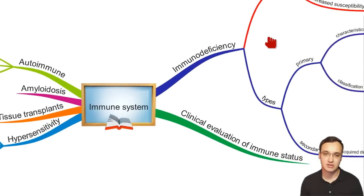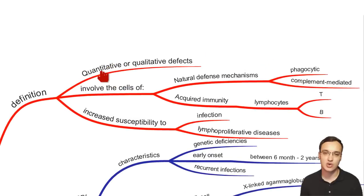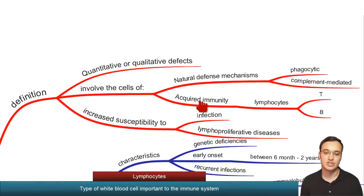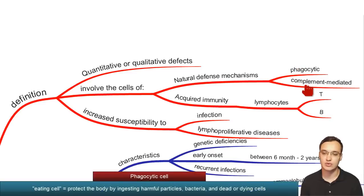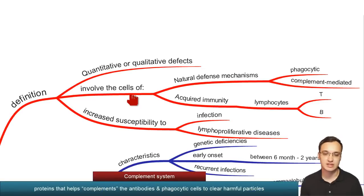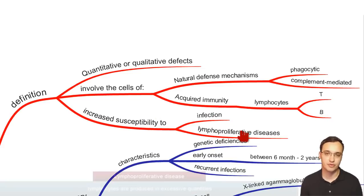First of all, what is immunodeficiency? It's defined as a quantitative or qualitative defect of some cells — specifically lymphocytes like T and B lymphocytes, which is acquired immunity — or a defect of the phagocytic cells or the complement-mediated system. Quantitative means a reduced number of these cells; qualitative means the function of these cells is impaired.